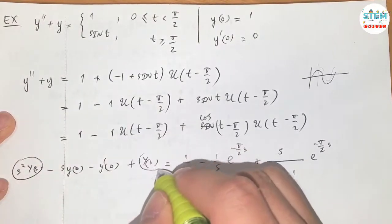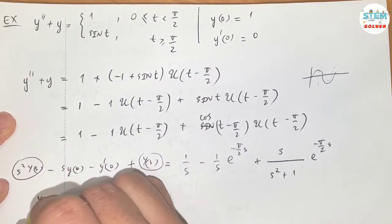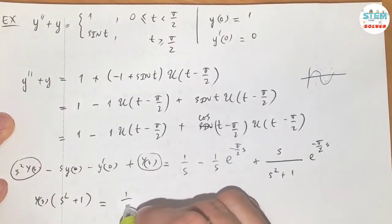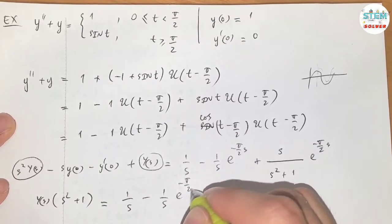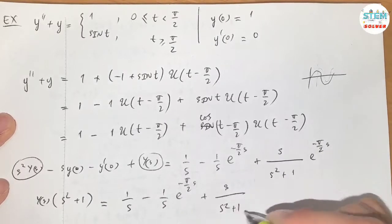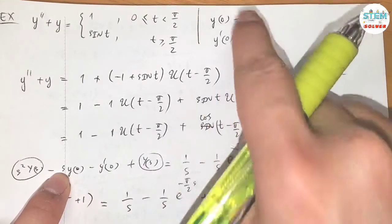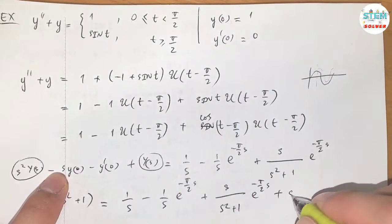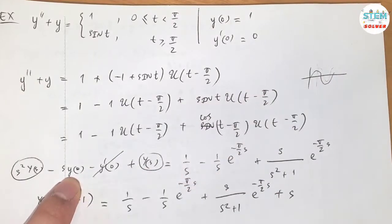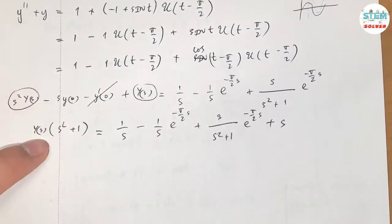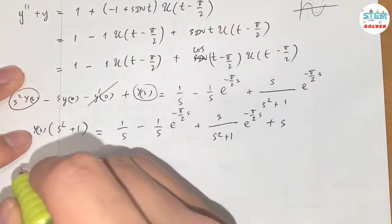Now let's take a look at capital Y of s factored out. So I have s squared plus 1 equals, rewrite this. So for this one, y of 0 equals 1, so I have negative s, move to the other side minus s, y prime of 0 equals 0, so just cancel, ignore it.